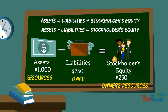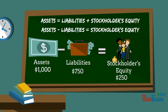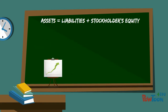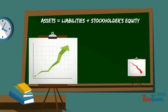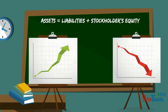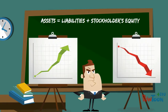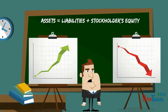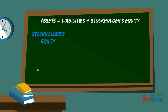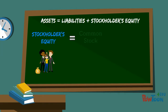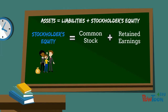However, this portion of the equation is very static — it doesn't show if the company is making money or where it is losing money. So what we can do is break our stockholders' equity into its two main components: common stock and retained earnings.